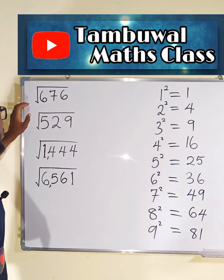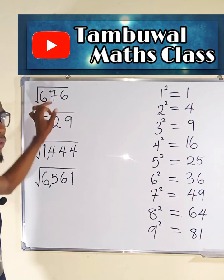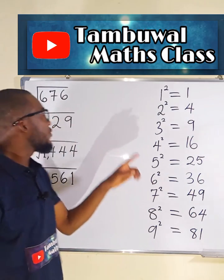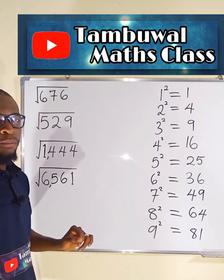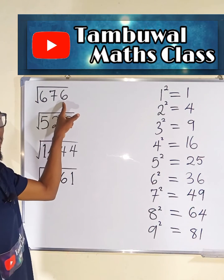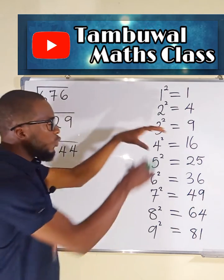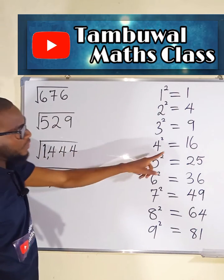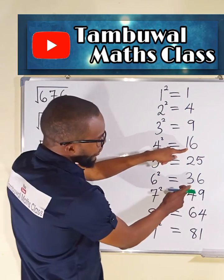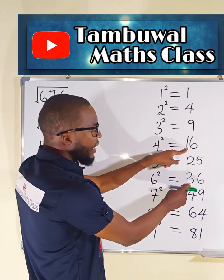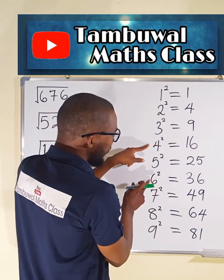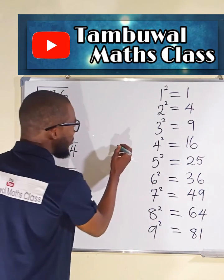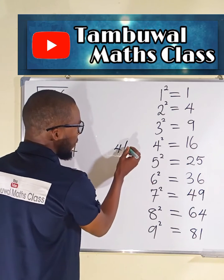Let's begin with the first one. We want to find the square root of 676. The first thing we need to find is the last digit of the square root. We consider the last digit of 676, which is 6. We locate a perfect square number that ends with 6 — we have two here — and their corresponding square roots are 4 and 6 respectively. Therefore, the last digit of this square root will either be 4 or 6.